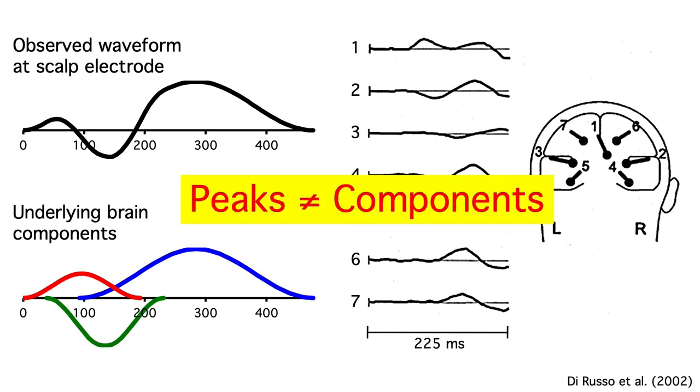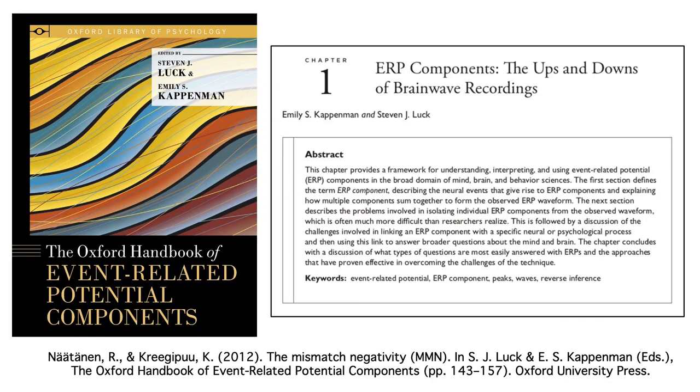We see the peaks, but we can only draw indirect inferences about the underlying components. If you'd like to know more about how ERP components are defined, and how they can be estimated from the observed scalp waveforms, take a look at this chapter that Emily and I wrote for the Oxford Handbook of ERP Components.